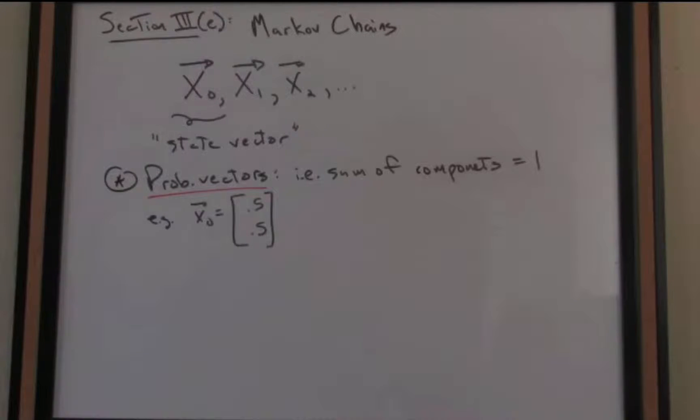In addition to that, each of the vectors is, in a mathematical sense, called a probability vector, i.e., the sum of the components equals 1. So, for instance,